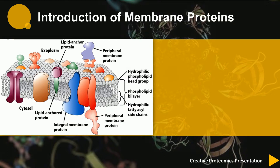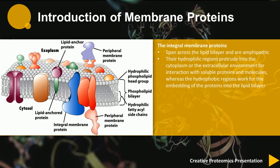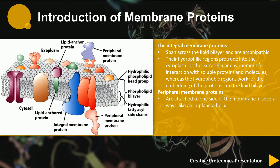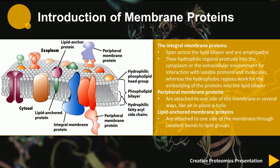The integral membrane proteins span across the lipid bilayer and are amphipathic. Their hydrophilic regions protrude into the cytoplasm or the extracellular environment for interaction with soluble proteins and molecules, whereas the hydrophobic regions work for the embedding of the proteins into the lipid bilayer. Peripheral membrane proteins are attached to one side of the membrane, and the lipid-anchored membrane proteins are attached to one side of the membrane through covalent bonds to lipid groups.